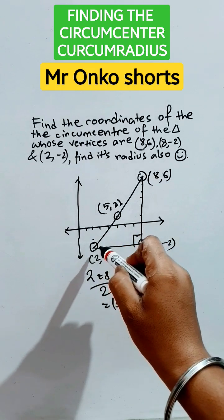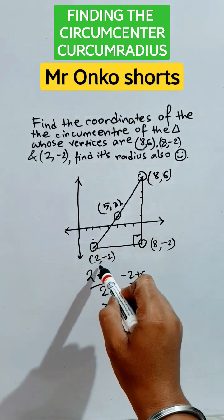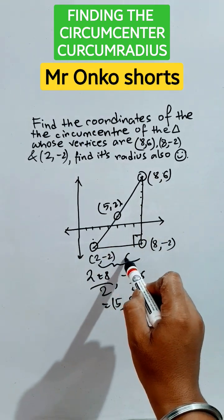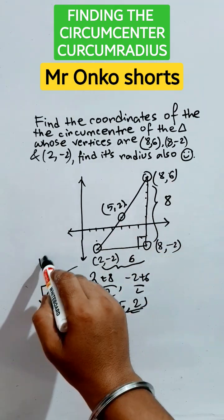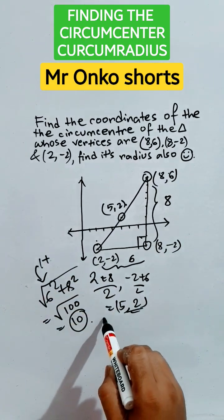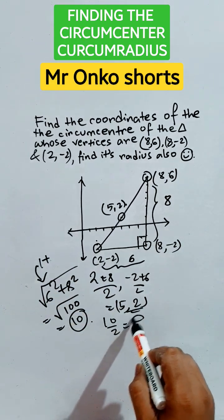The length of the hypotenuse—this side is 6 and this side is 8—so the length of the hypotenuse will be 10. Now half of the hypotenuse is nothing but the radius of the circumcircle.